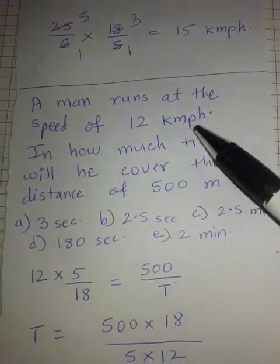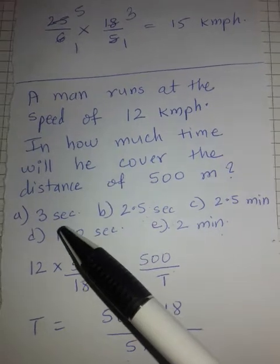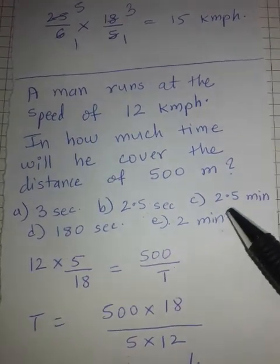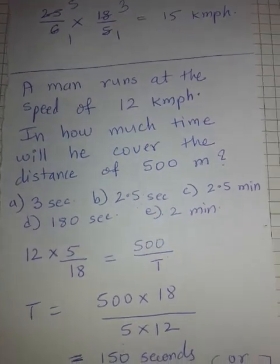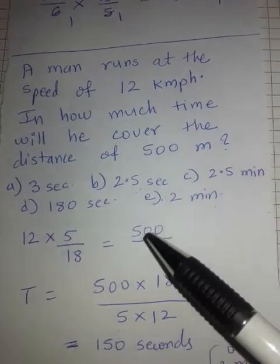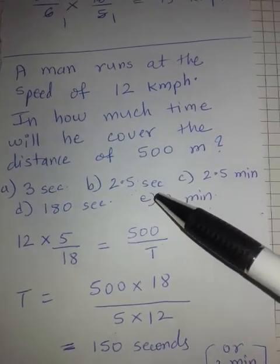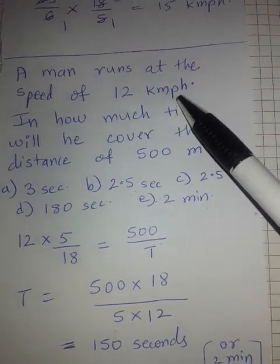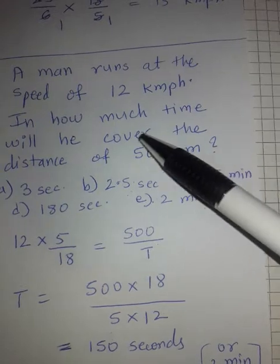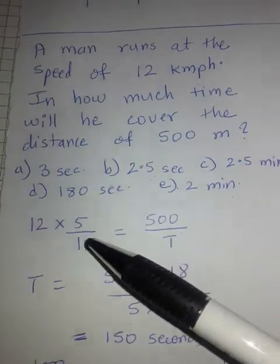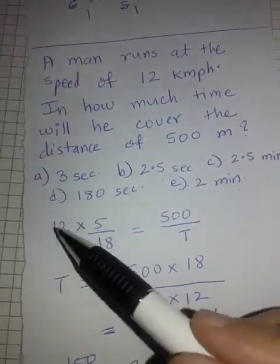A man runs at 12 km/h. In how much time will he cover 500 metres? The answer options are in seconds and minutes: 3 seconds, 2.5 seconds, 2.5 minutes, 180 seconds, or 2 minutes. Since distance is in metres, convert speed to m/s first: 12 × 5/18 m/s. This is equal to Distance/Time, where distance is 500 metres and time is unknown.